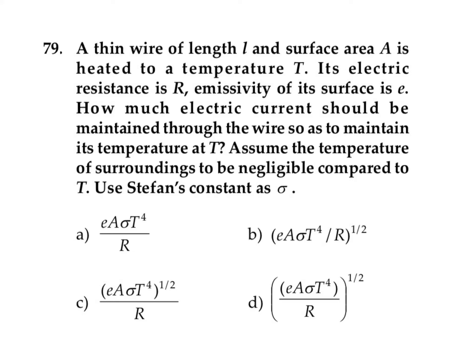In this question it is given that a thin wire of length L and surface area A is heated to a temperature T. Its electric resistance is R and emissivity of surface is E. How much electric current should be maintained through the wire so as to maintain its temperature at T? Assume the temperature of surrounding to be negligible compared to T and use Stefan's constant as sigma.